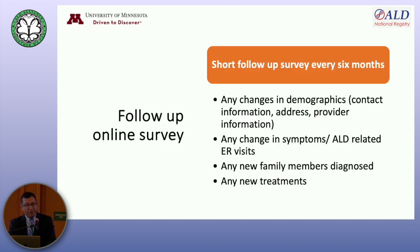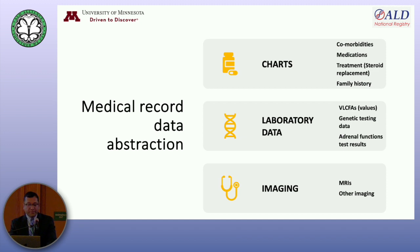Once this intake survey is done, we do a follow-up survey every six months. It is short — essentially capturing any change in demographics, change in provider information, any change in symptoms that could be related to ALD, any ER visits, any new family members diagnosed, and any new treatments started for the participant. A lot of work goes into medical record data abstraction, where we look through the medical charts and extract information about the comorbidities, medications, and treatments — especially steroid replacement or any other therapy for seizures or other symptoms. We also look at the family history in this medical record data abstraction.